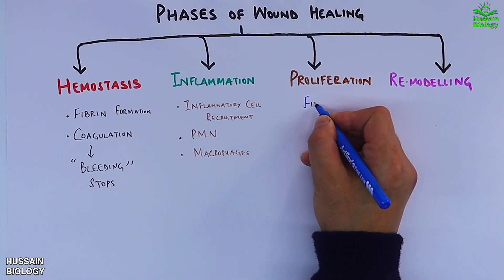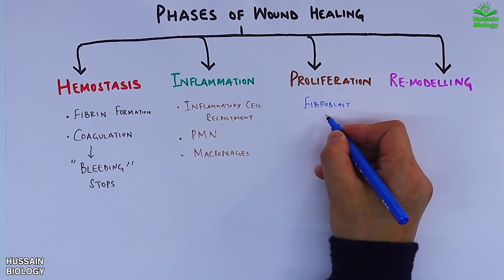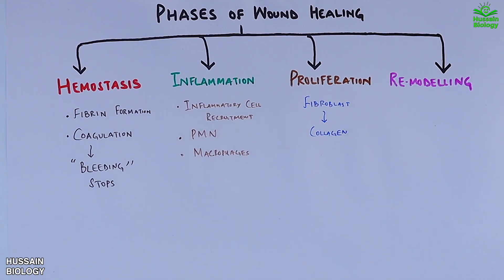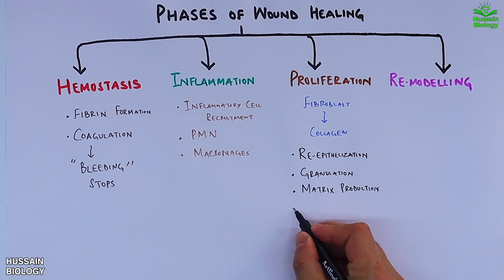Then we have the third step, that's proliferation, where fibroblasts are recruited first which lay the collagen in the wound bed, followed by the epithelialization, then granulation, matrix production, and finally we have the scar initiation.